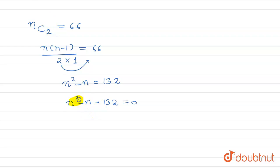This is nothing but a simple quadratic equation. If we factorize it, we will get (n - 12)(n + 11) is equals to 0. From here we get n equals to 12 or n equals to -11.